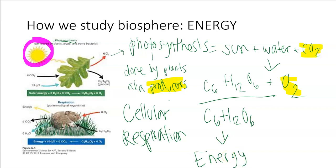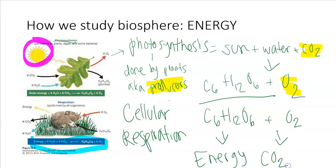Cellular respiration is a really important process. If you look at the equation, it's basically the reverse of photosynthesis. Sugar and oxygen are taken in, and energy and carbon dioxide are produced. So there is that exchange where you take the oxygen and sugar that plants have given you, and you create waste and also create energy. Everybody does cellular respiration.